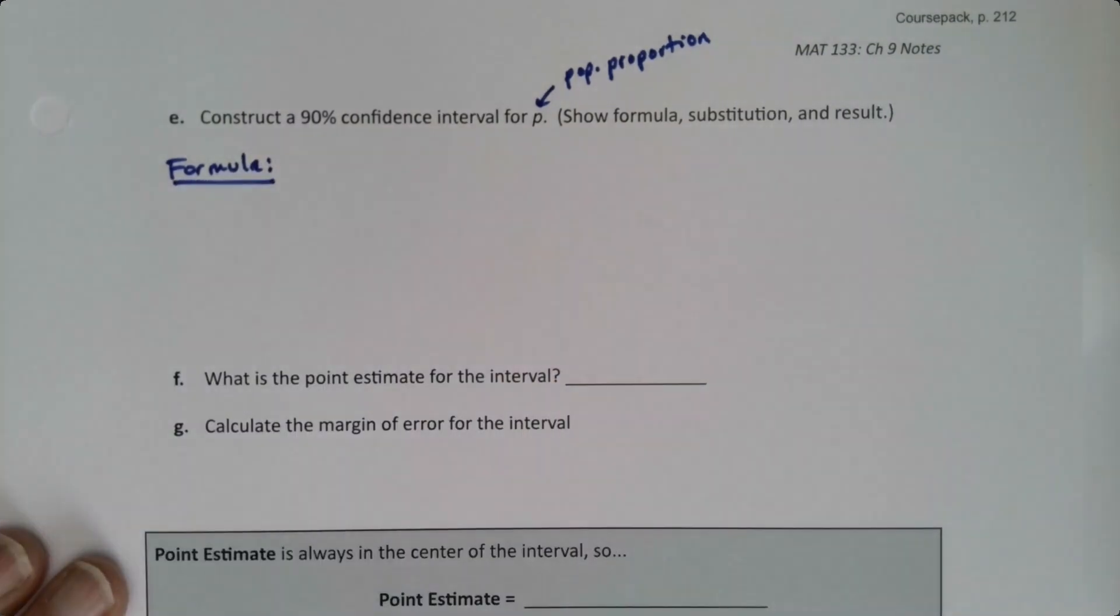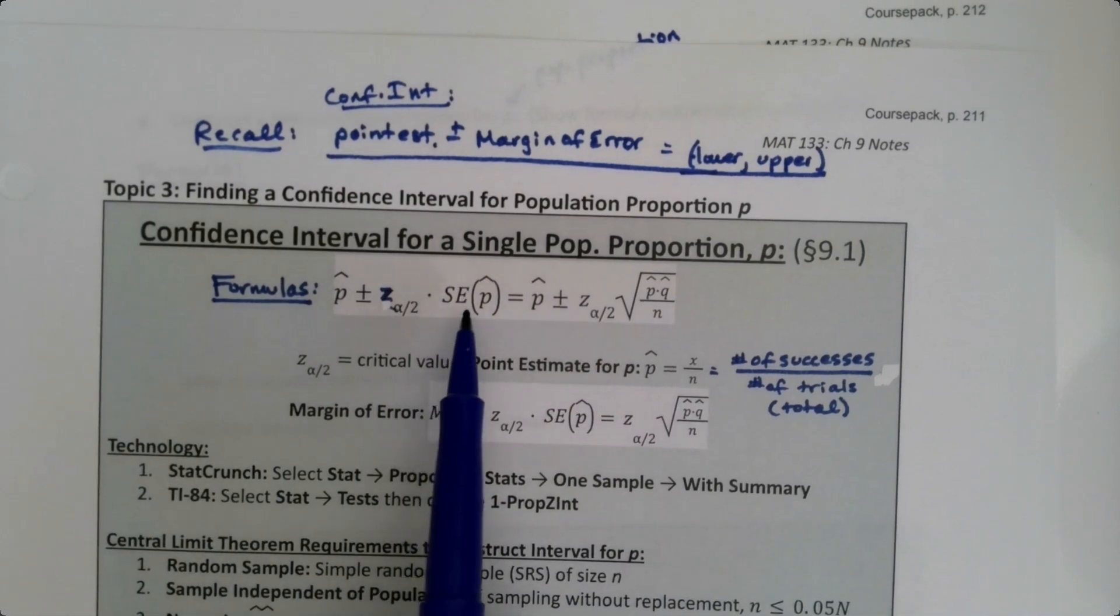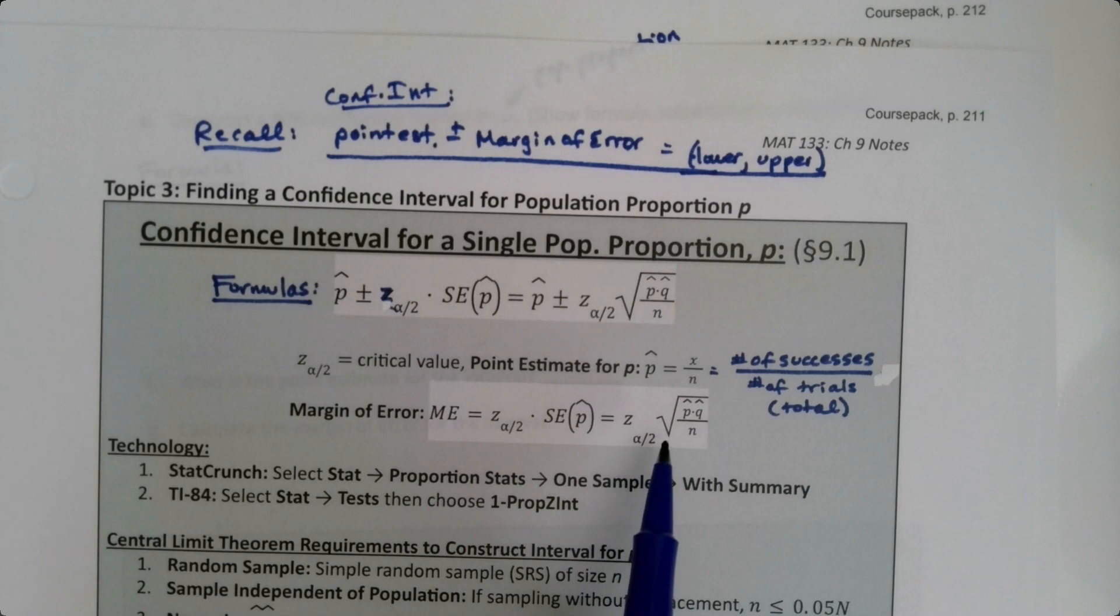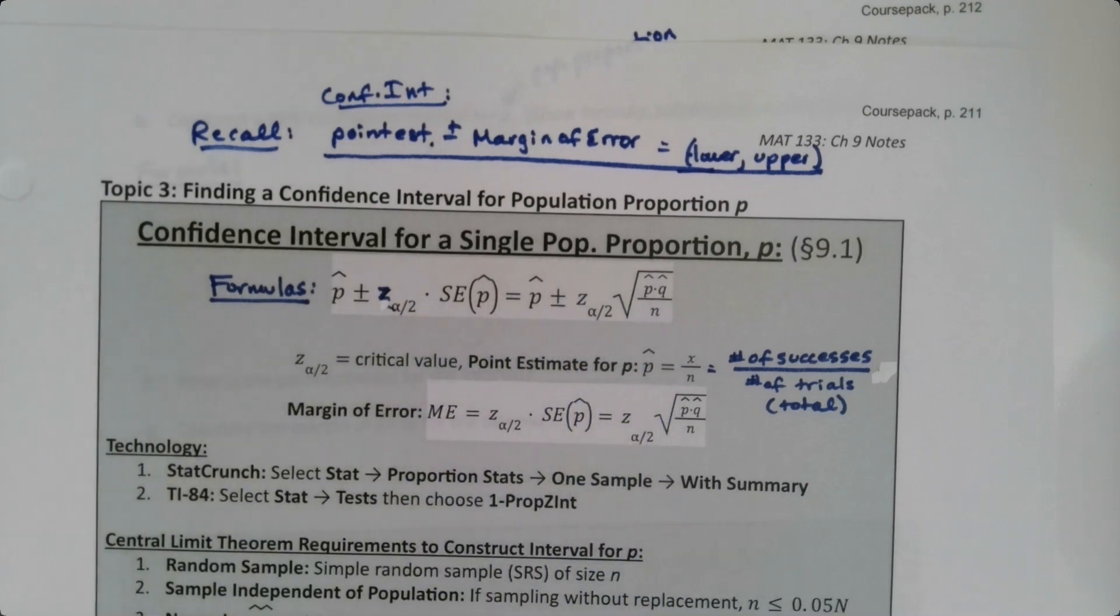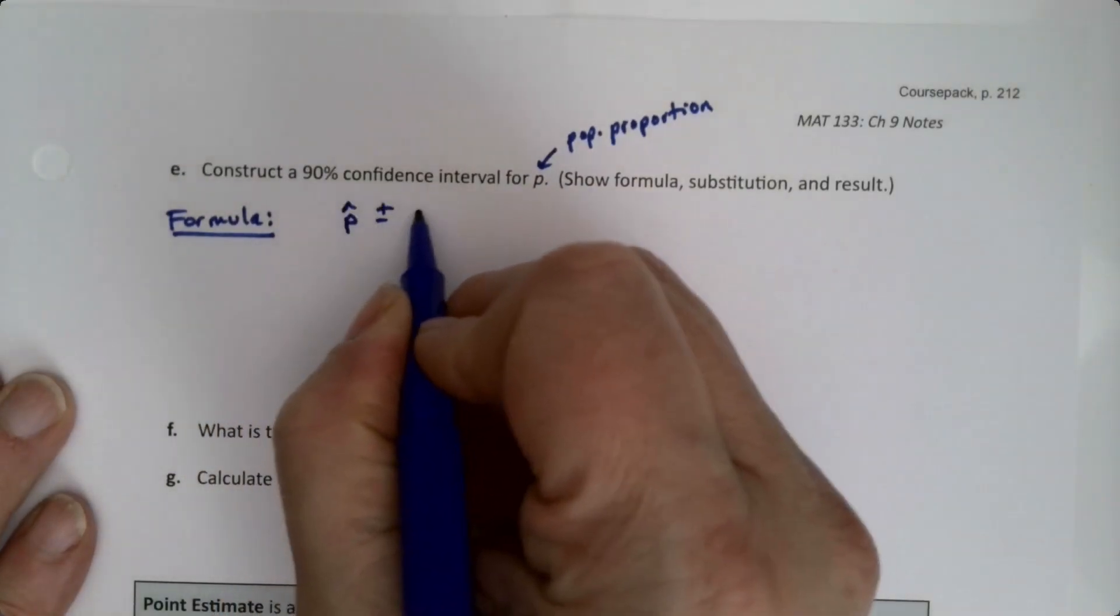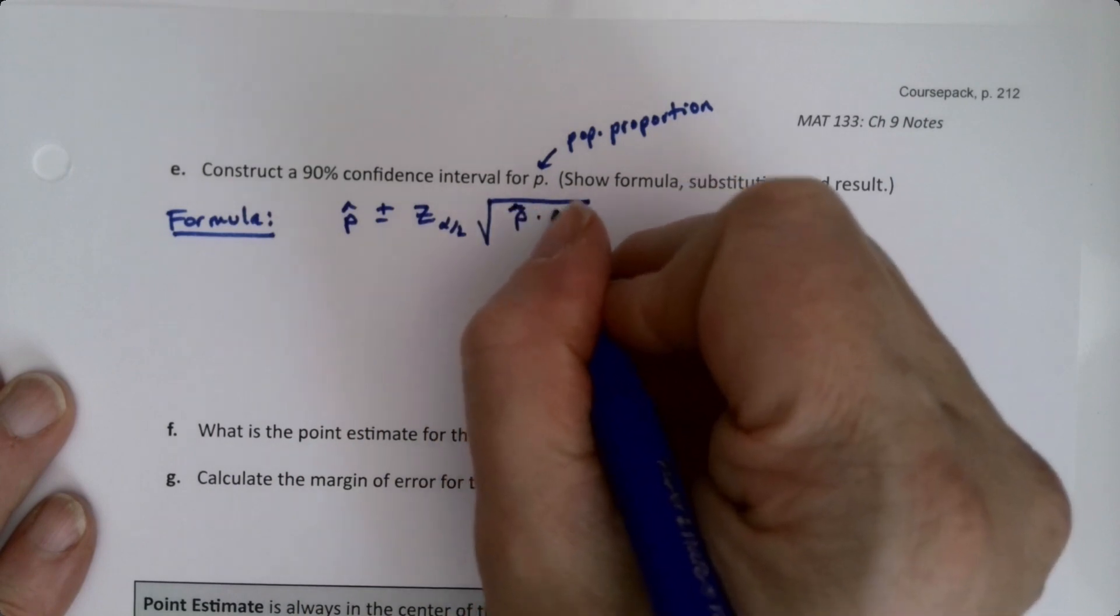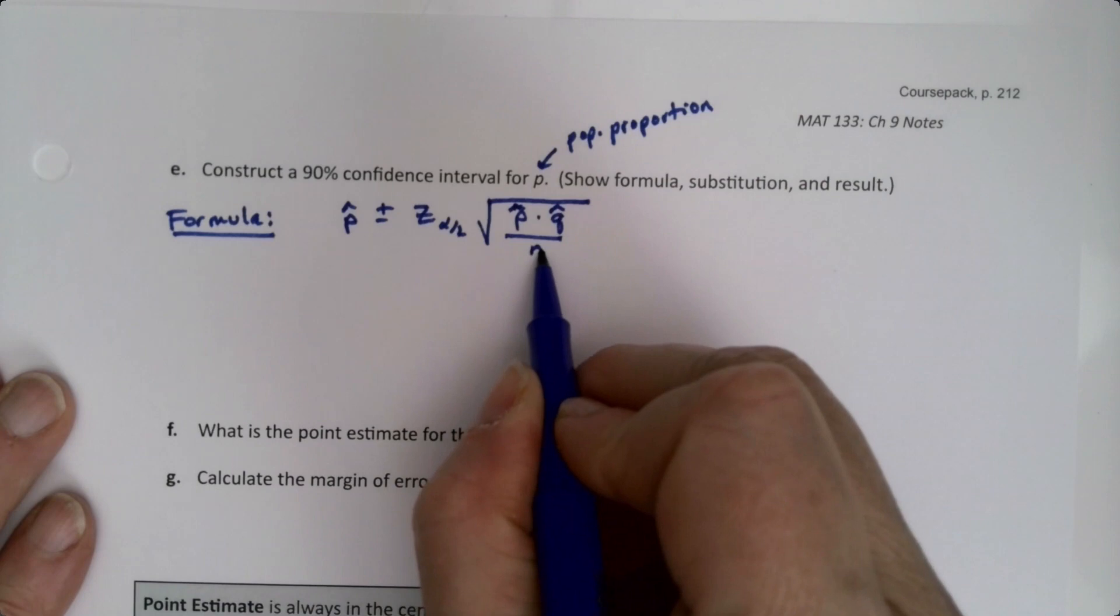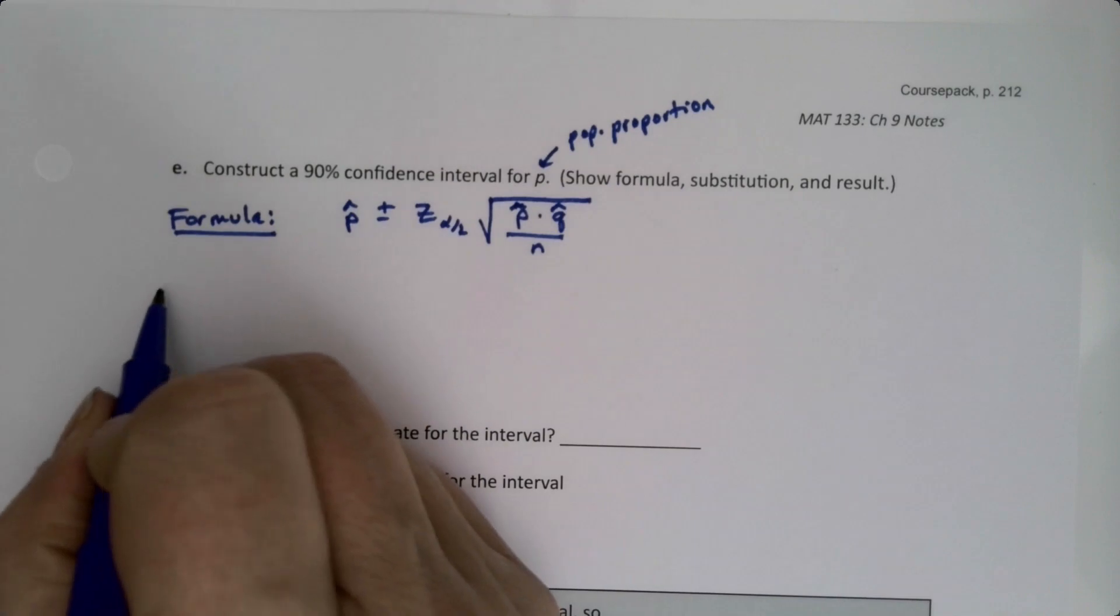So the formula, well, there's two options. If you remember back here to the box, there's one on the left and one on the right. Now if we have the standard error, if it was given to us, we could use the one on the left, no problem. But the problem is we don't really have it. So we're just going to use the one on the right. The formula on the left is really more to help you understand what's happening, but it doesn't really help us that much when we have to do it by hand.